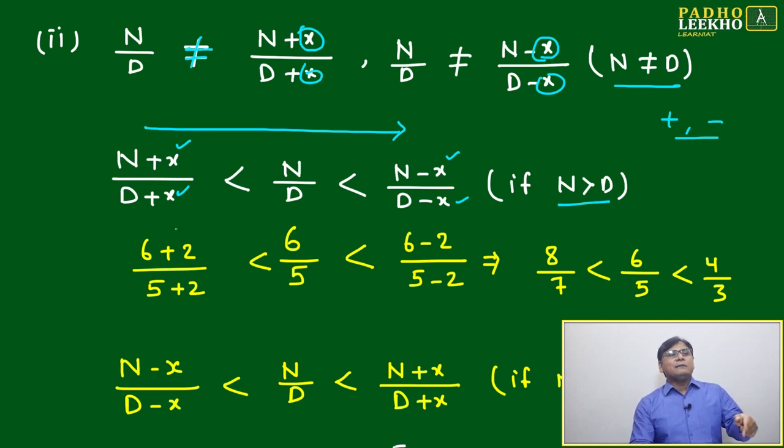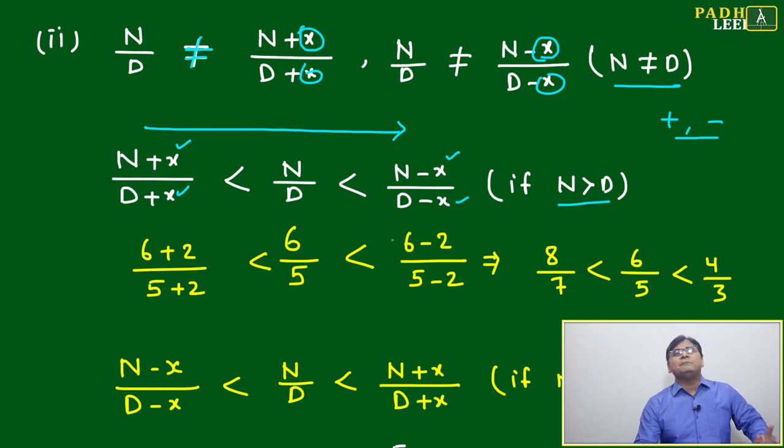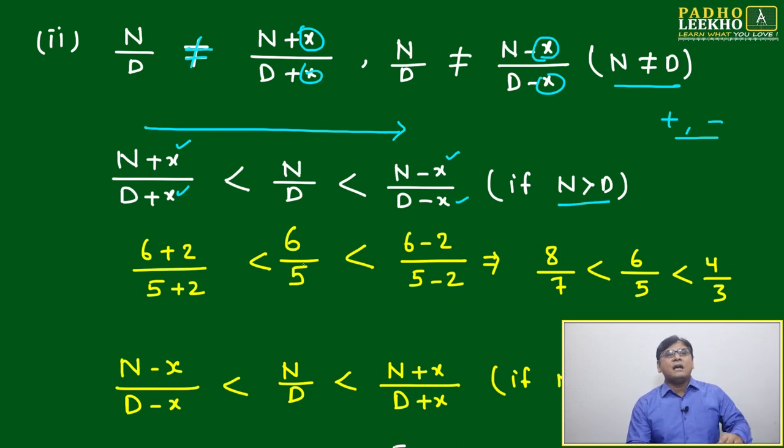The increasing order sequence is: (n + x) / (d + x) is less than n/d, and n/d is less than (n − x) / (d − x). This ordering holds when N is greater than D.